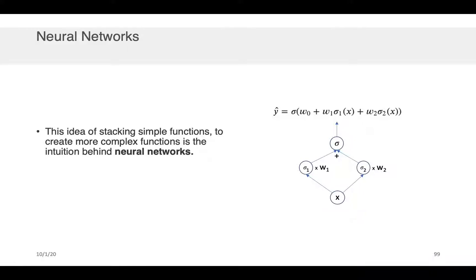Now, this idea of using simple functions, stacking simple functions together, to create more complicated functions with greater amounts of flexibility to approximate relationships between x and y, that is the intuition behind a neural network. That's all it is. So people oftentimes like to represent neural networks graphically, but the neural network graphical representation just makes it easier to read than this long equation up here. So let's step through it together.